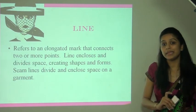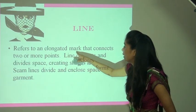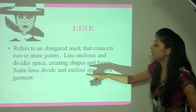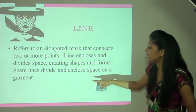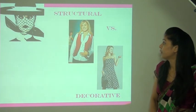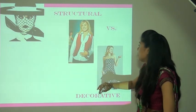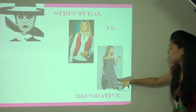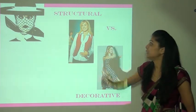Line — the first element. Line refers to an elongated mark that connects two or more points. Line encloses and divides space, creating shapes and forms. Seam lines divide and enclose space on a garment. There are two types of lines: structure lines and decorative lines.